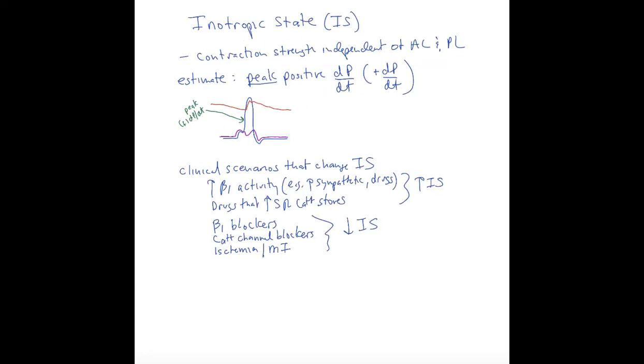Finally, we have the inotropic state. This is the contractility of the ventricle - we usually use this term to describe the ventricle contraction strength. It's independent of the afterload and preload. Because afterload and preload can affect how much blood's coming out of the heart, we are looking at keeping those constant in a conceptual way - this is truly the contractility of the ventricle, its intrinsic contraction properties.